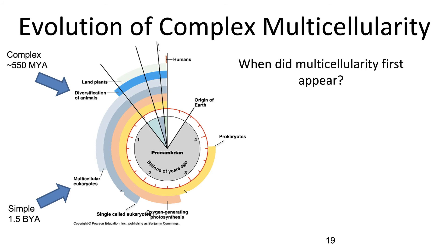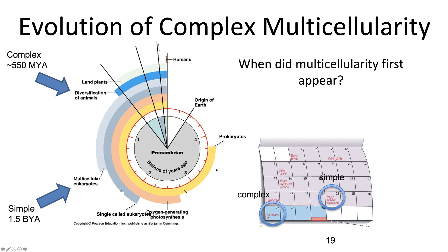When did complex multicellularity evolve in the deep geological history of Earth? The origin of Earth was about 4.5 billion years ago. The first prokaryotes appeared about 3.75 billion years ago. The first single-celled eukaryotes appeared around 2 billion years ago. Simple multicellularity evolved around 1.5 billion years ago. Complex multicellularity didn't come onto the scene until about 550 million years ago. On a condensed 30-day calendar representing 4.5 billion years, simple multicellularity would appear around day 24, and complex multicellularity wouldn't appear until about day 27 — very late in the game.